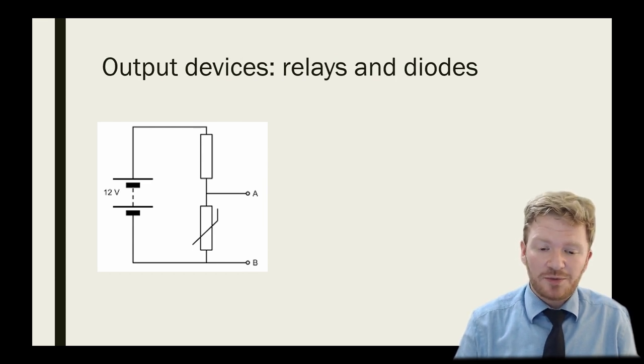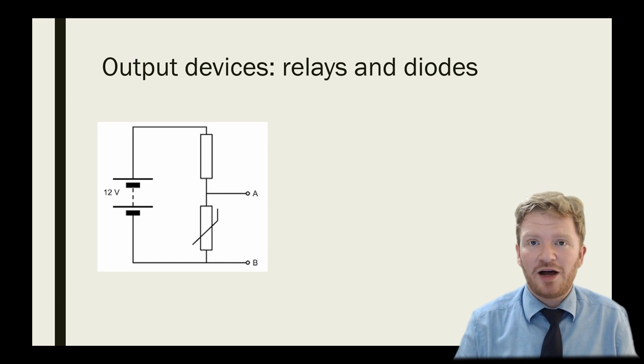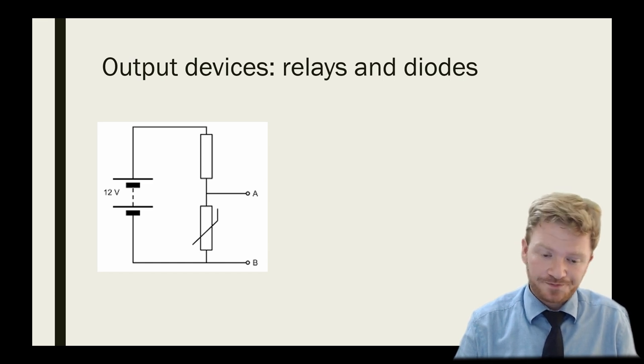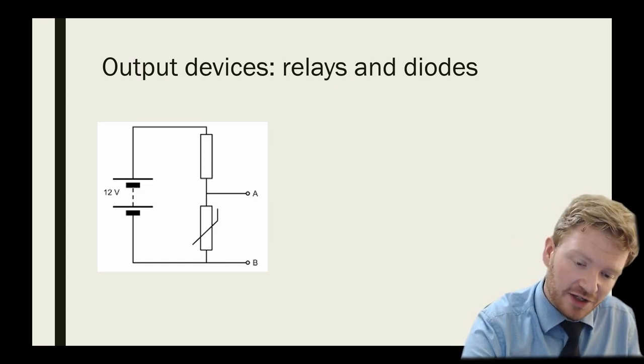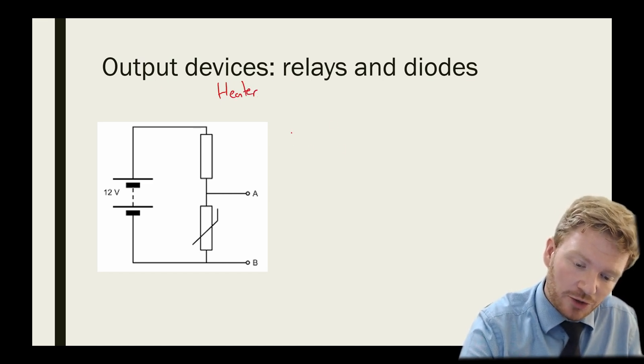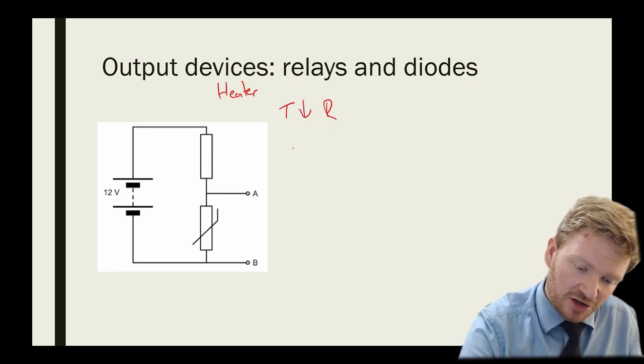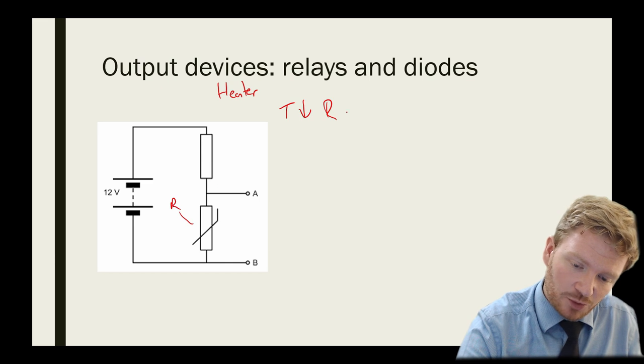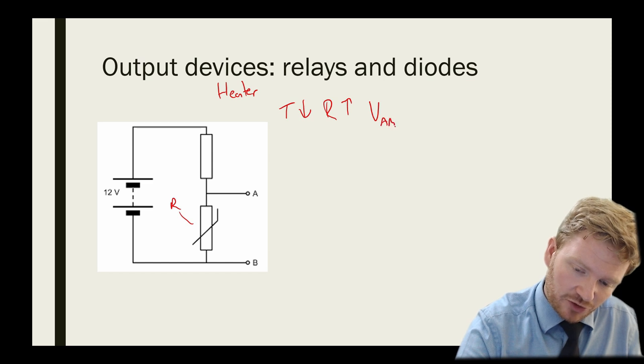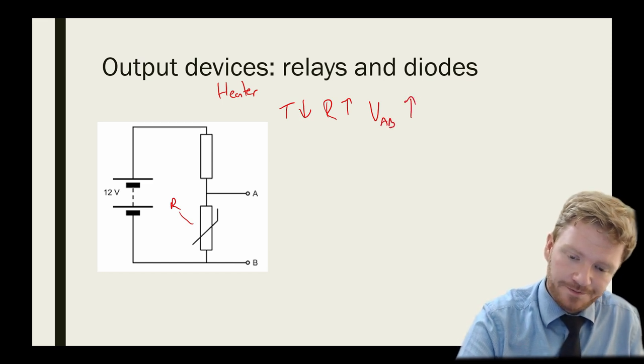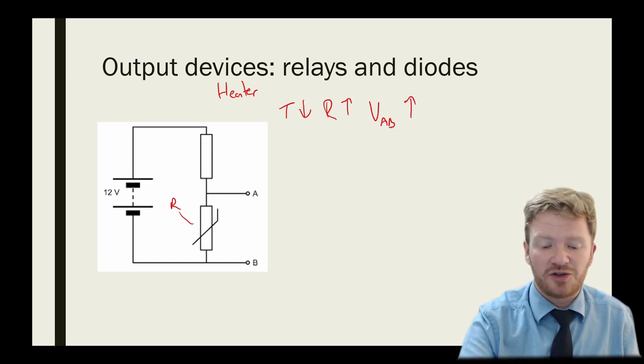Now there's one last thing I want to talk about very quickly before we go and that's how we could actually switch these things on. So let's say I have a heater. As I discussed earlier, we now know that when the temperature drops, this resistance, I'm just going to call this R here, this resistor will increase and therefore the voltage between A and B, the voltage out, will go up. So how could I use that to switch something on?